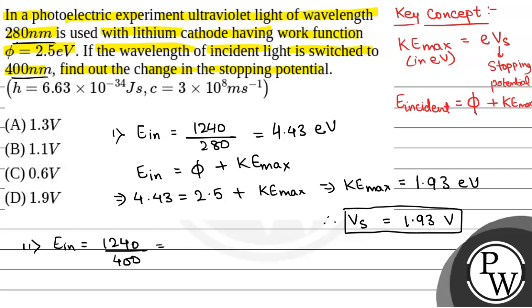Therefore, KE_max in the second case will be equal to energy incident 3.1 minus φ that is 2.5 which is equal to 0.6 electron volts. Therefore, call this as Vs1 that is stopping potential in case 1 and stopping potential in case 2 will be equal to 0.6 volts.